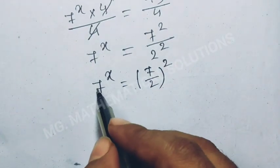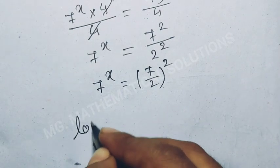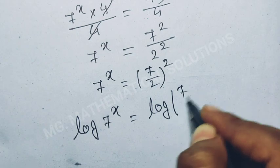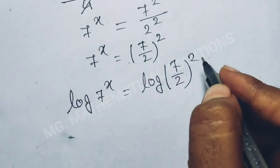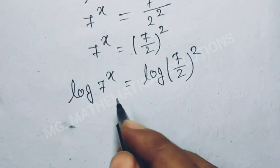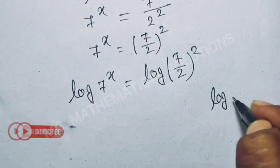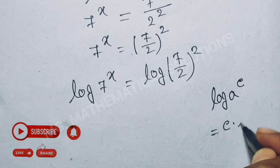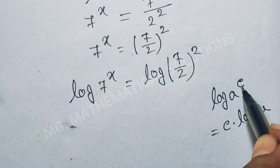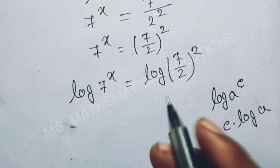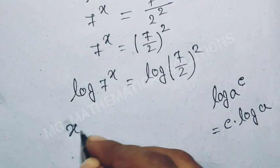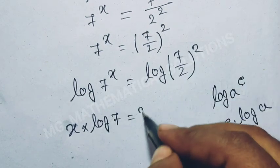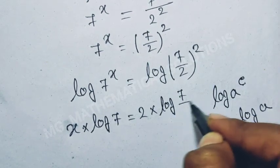Now, taking logarithm both sides. Log of 7 to the power x equal to log of 7 over 2, whole squared. Now we use the formula: log of a to the power c equal to c times log of a. Here c means x and a means 7. So x times log of 7 equal to 2 times log of 7 over 2.